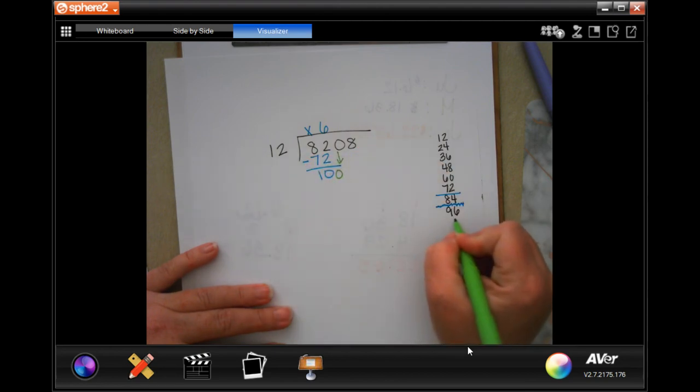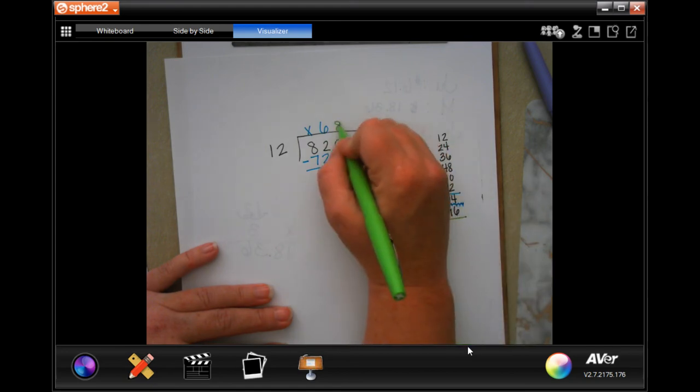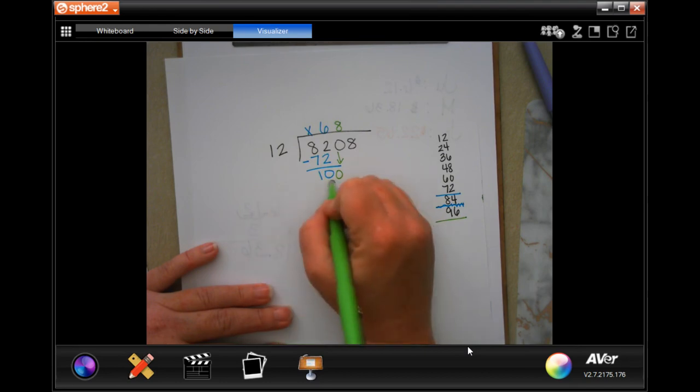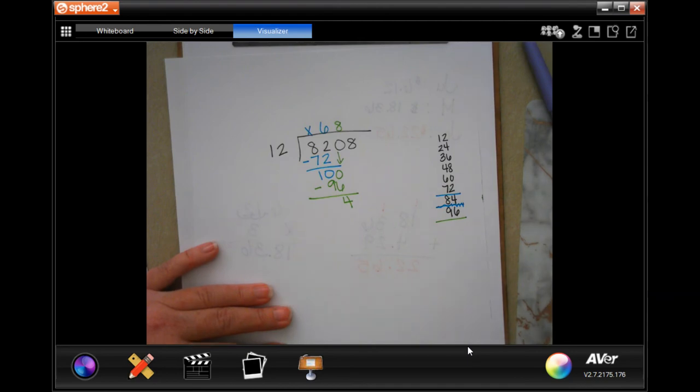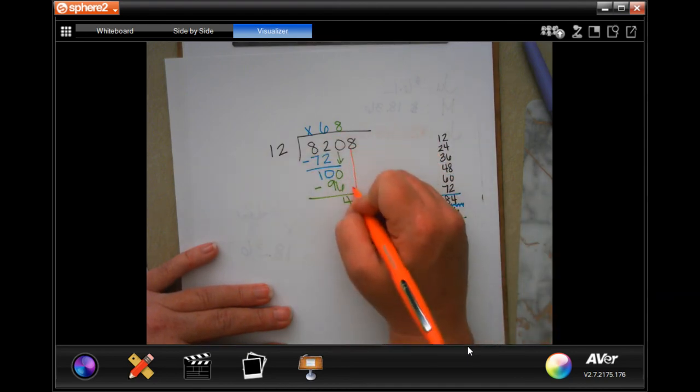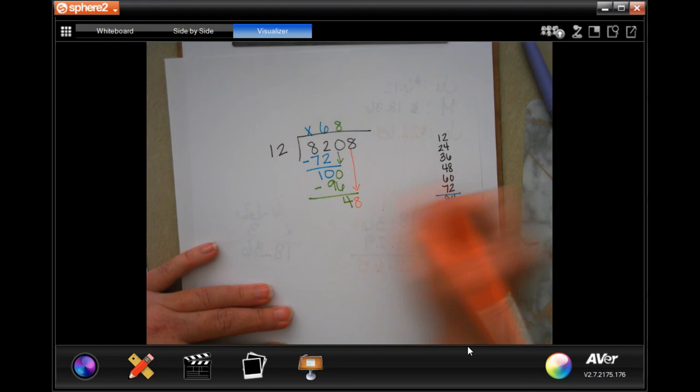12 into 100. 96 is going to be the most that that is. So that's 1, 2, 3, 4, 5, 6, 7, 8 times. 8 times 12 is 96. Subtract. We're going to have 4 left over. 4 is smaller than 12. So I'm going to bring down that 8.